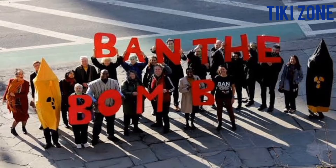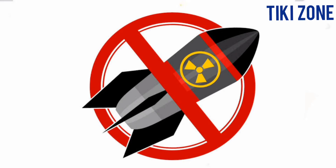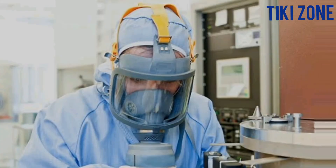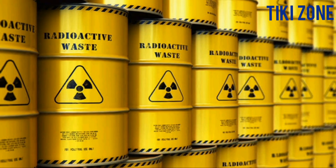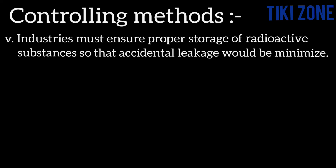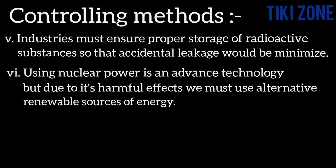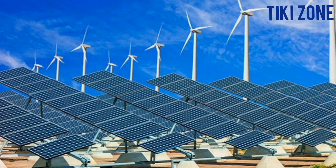For controlling measures: we should stop warfare and live peacefully, and the use and testing of nuclear weapons must be banned. Proper handling of radioisotopes and all safety measures must be taken by researchers during their work. Industries must adopt proper disposal methods for radioactive waste, and must ensure proper storage of radioactive substances so that accidental leakage is minimized. Since nuclear power has harmful effects, we must use alternative renewable sources of energy like solar energy, wind energy, etc.